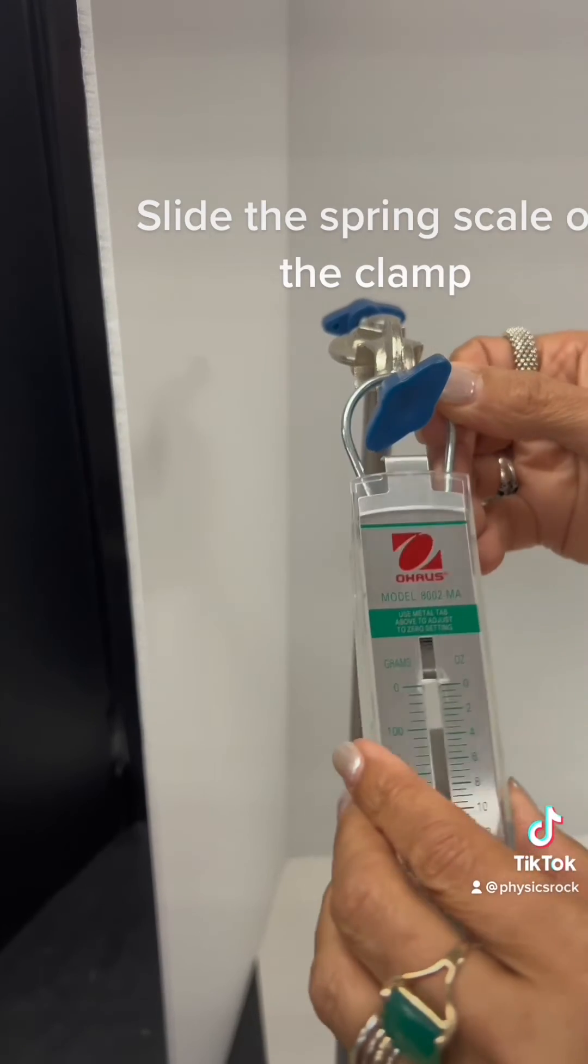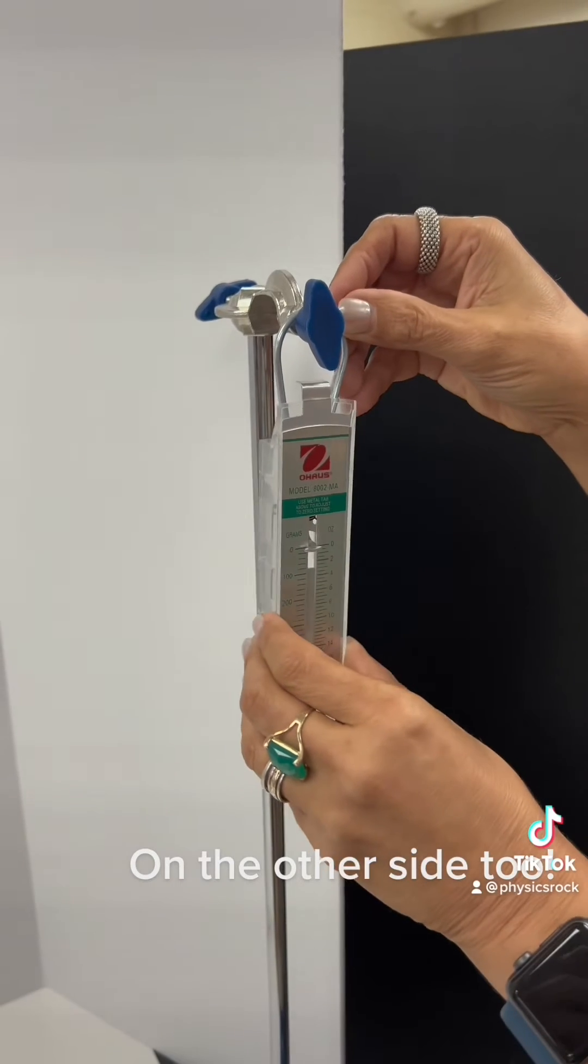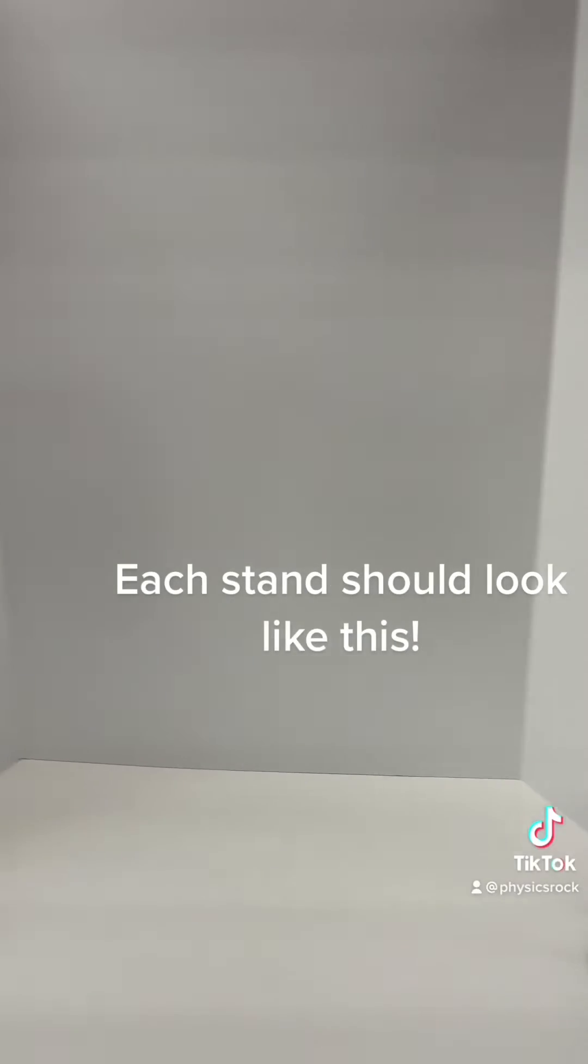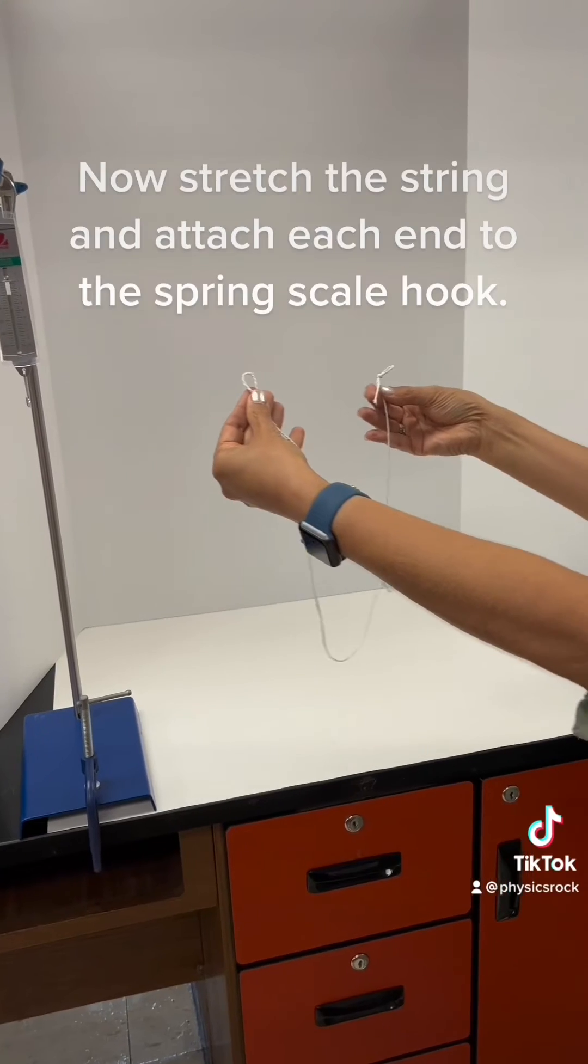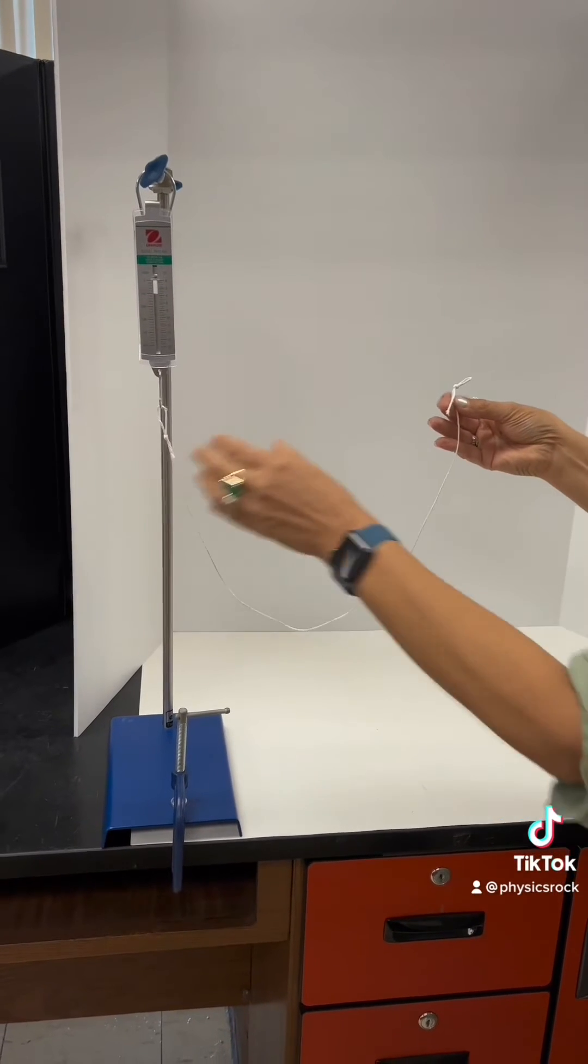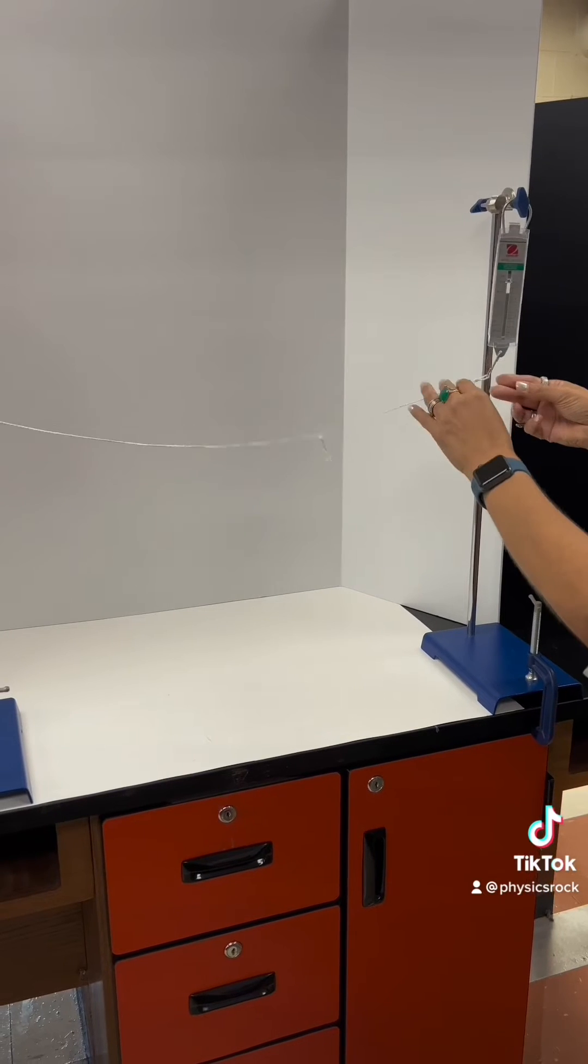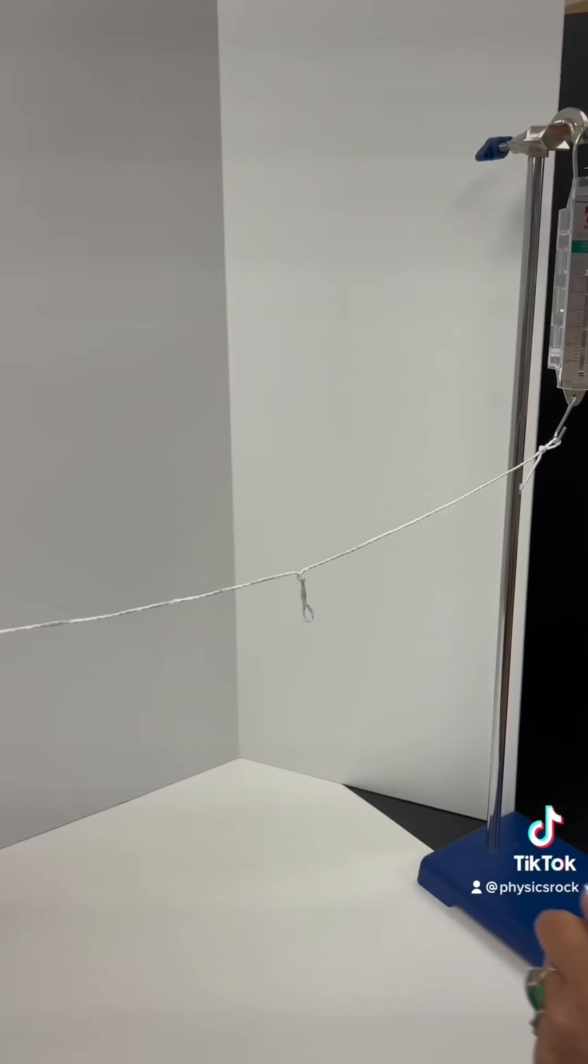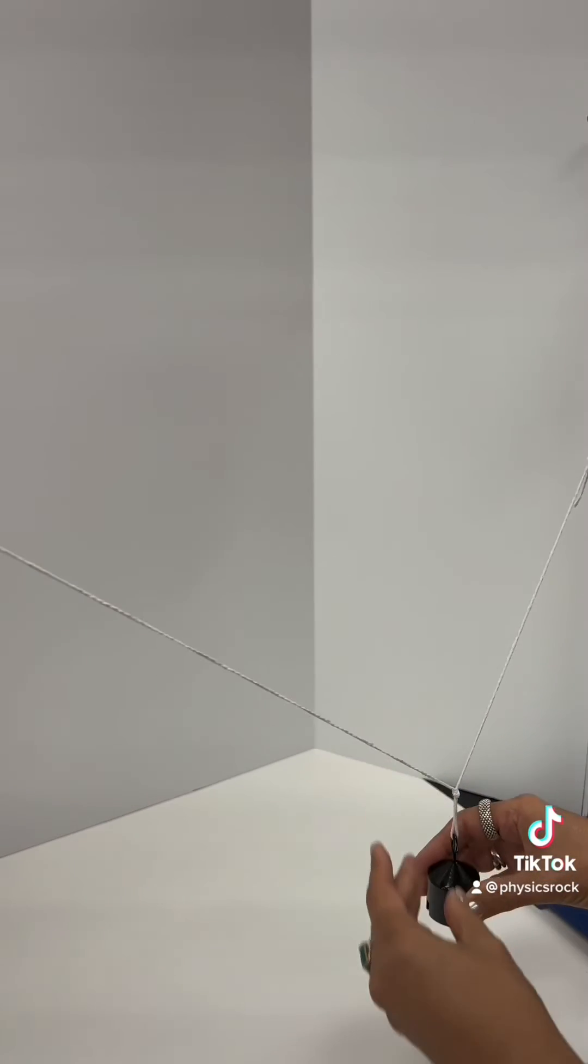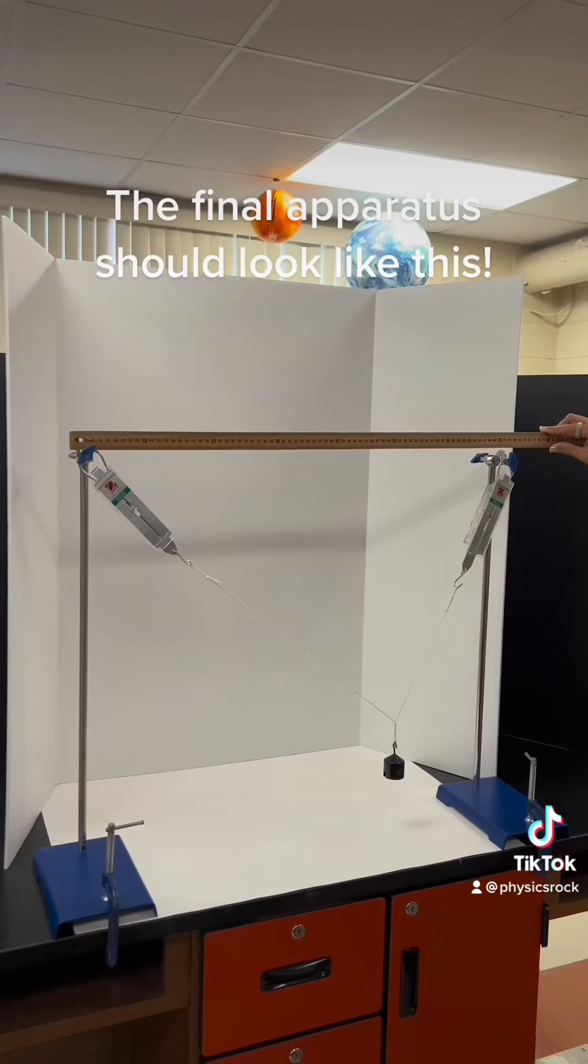Slide the spring scale on the clamp. On the other side too. Each stand should look like this. Now stretch the string and attach each end to the spring scale hook. Attach the hanging mass in the string knot. The final apparatus should look like this.